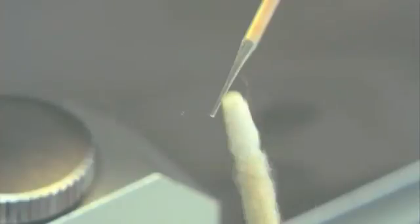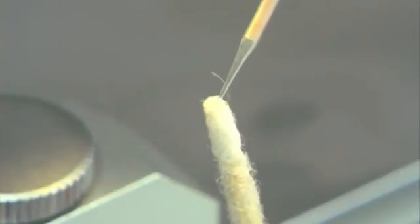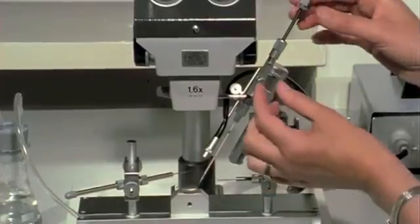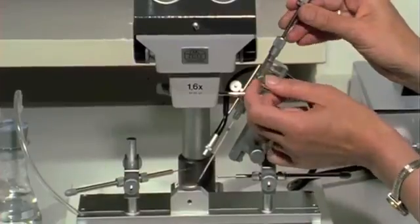If necessary, the tip of the cannula is cleaned off with a sterile swab. A drop of diluent closes the capillary to prevent the semen from desiccation. Now the syringe is ready for insemination.